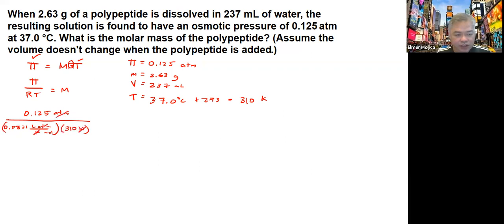You're given the constants that you can use. So you will end up with around 0.00491 mols per liter.